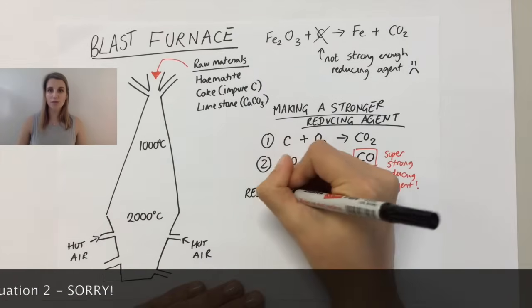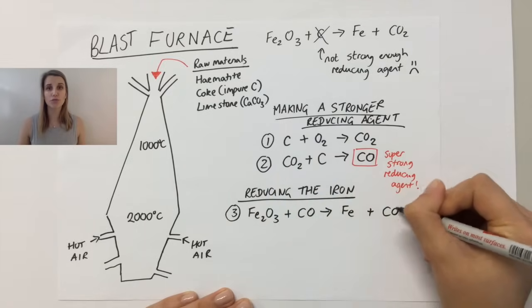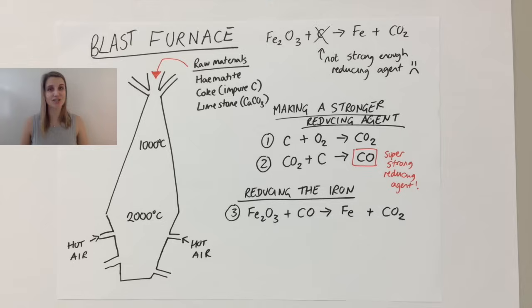Okay, so let's react the iron oxide now with my carbon monoxide. And that will reduce the iron oxide to pure iron and carbon dioxide. It balances like this.